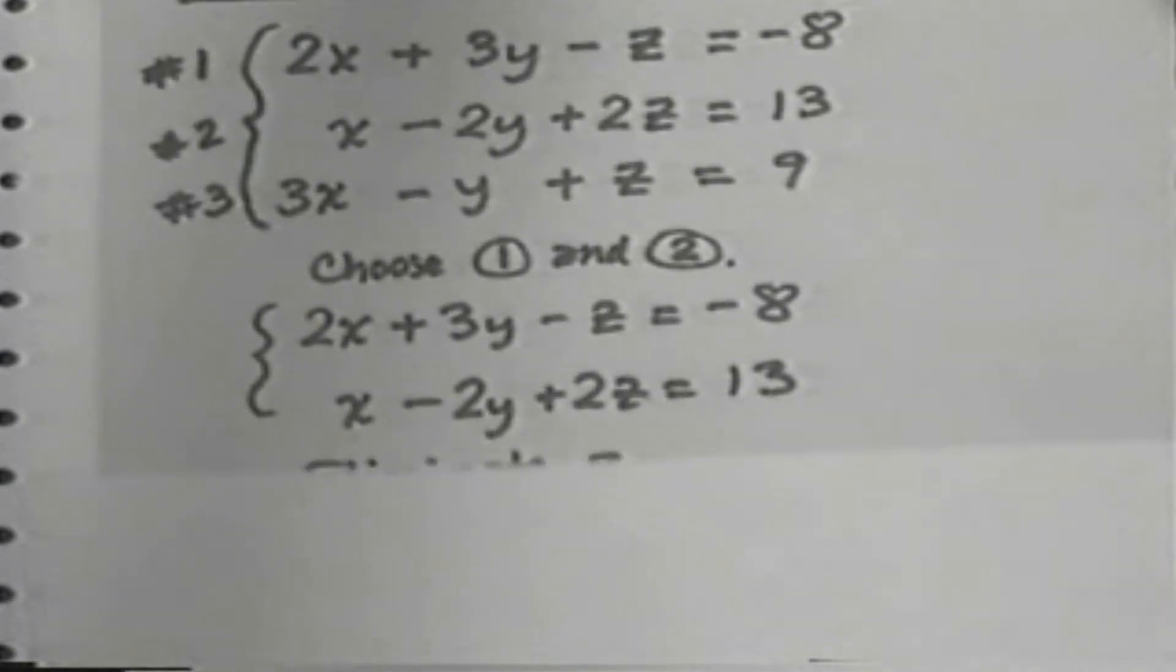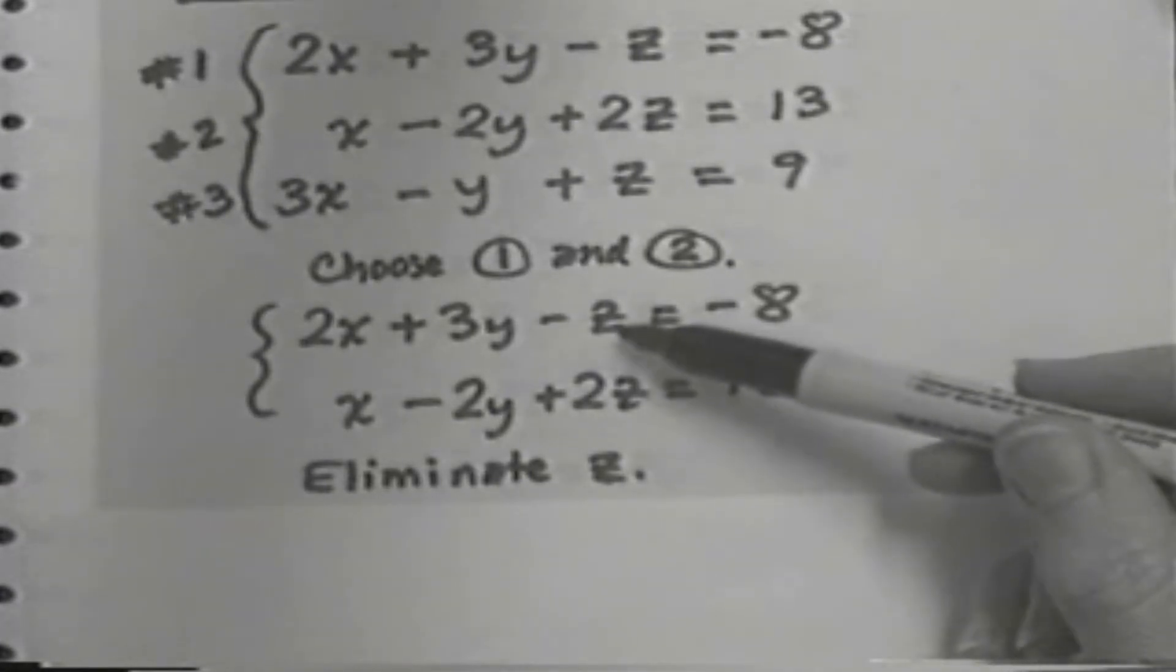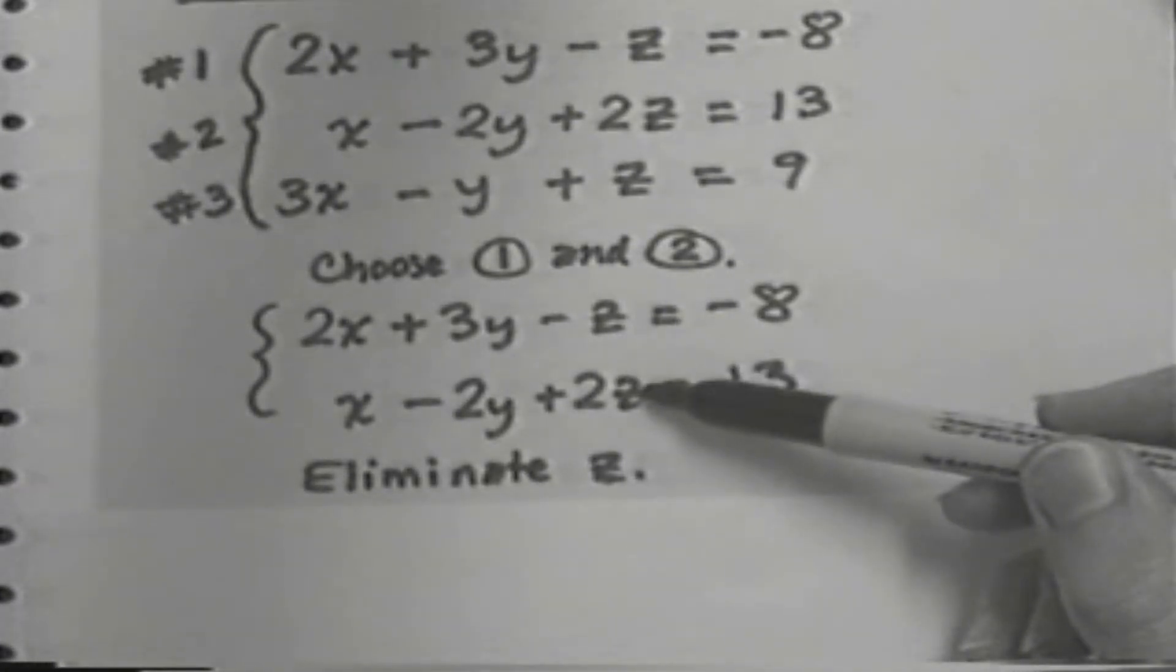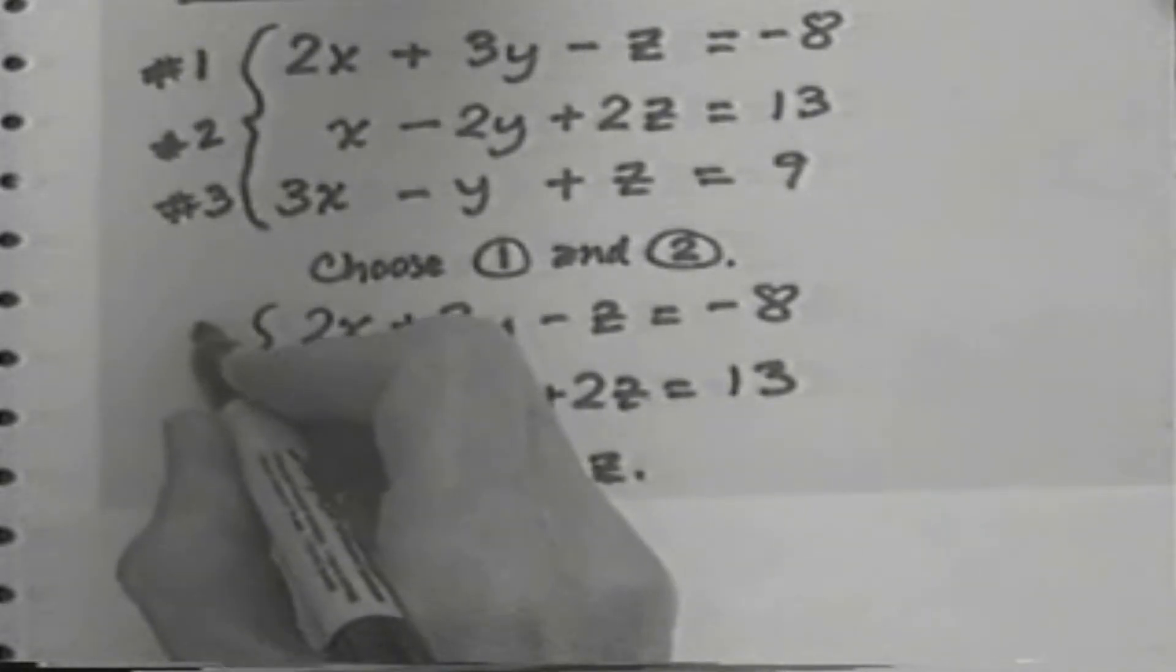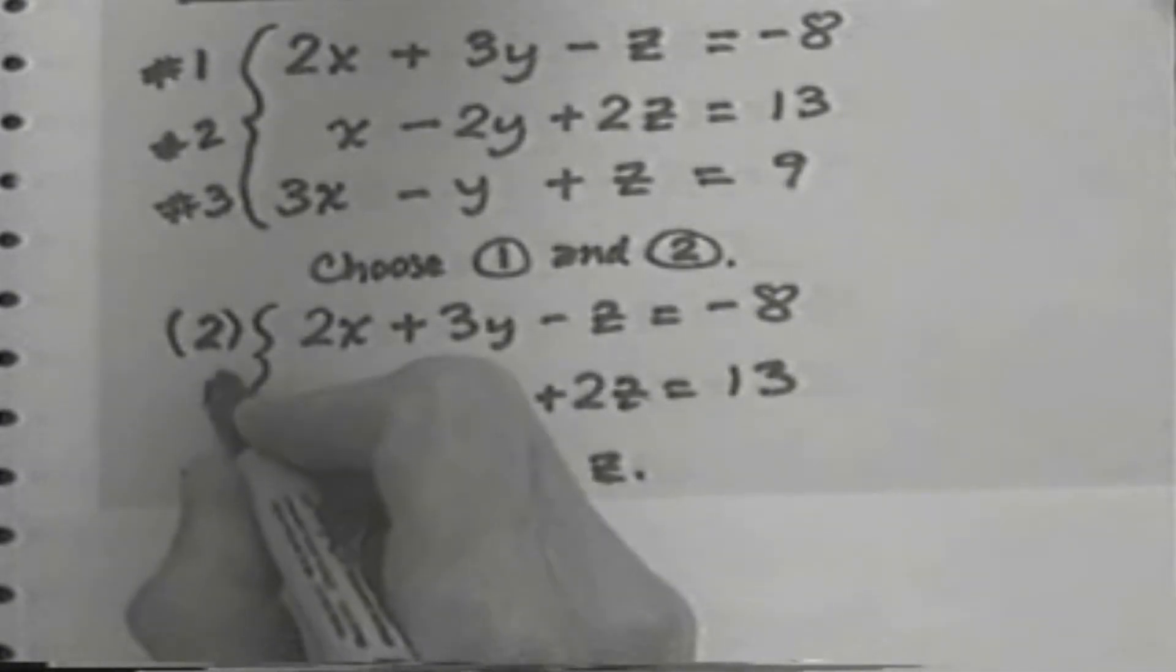To eliminate z, I must use the addition method to eliminate z by creating coefficients for z that are opposites of each other. I have negative 1z, positive 2z. The common coefficient should be 2, but different signs. And so I'll multiply the first equation by 2, the second equation by 1.